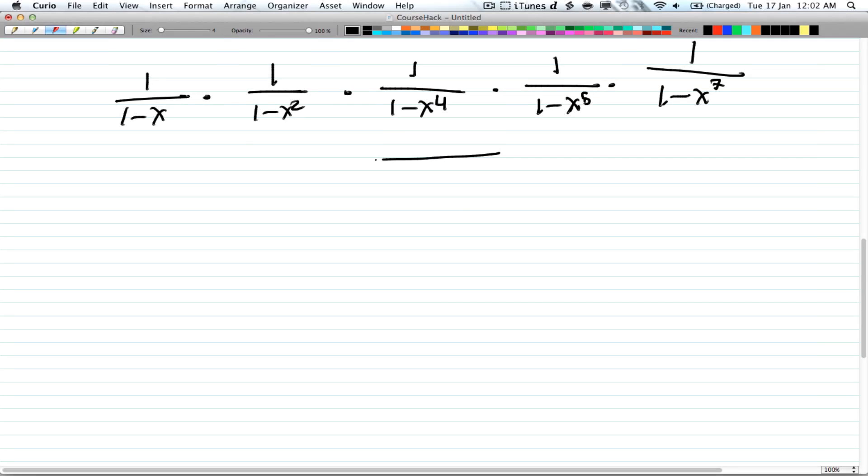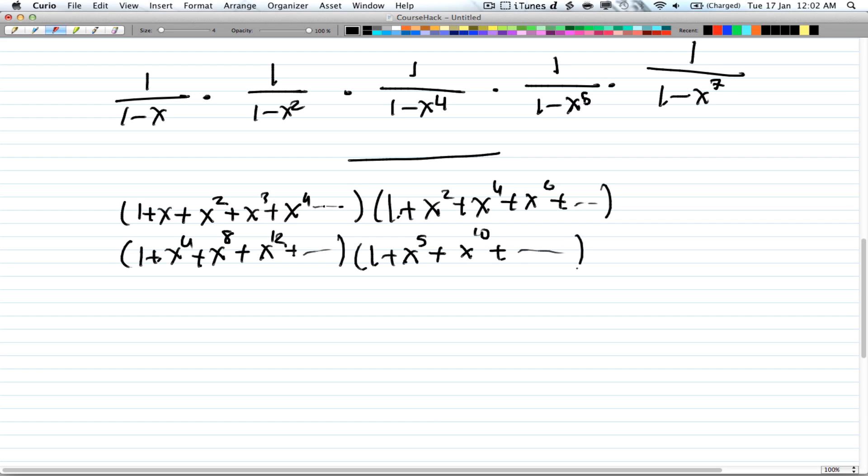So let's do the case where no summand is divisible by 3. So you can have 1 + x + x² + x³ and this will go on forever, times 1 + x² + x⁴, so these are the number of 2's. And then you don't want any 3's, so no 3's. And that will give you 1 + x⁴ + x⁸ + x¹² and so on. Then 1 + x⁵ + x¹⁰ and so on. No 6's, so you just go to 7's, and then so on and so forth.